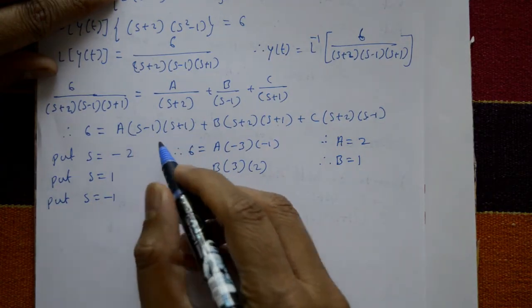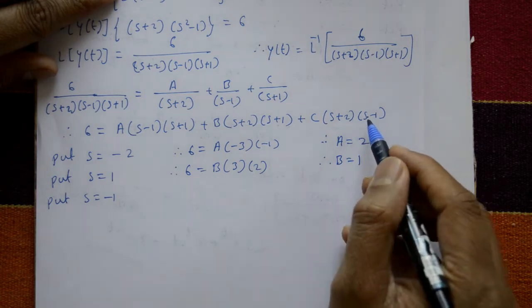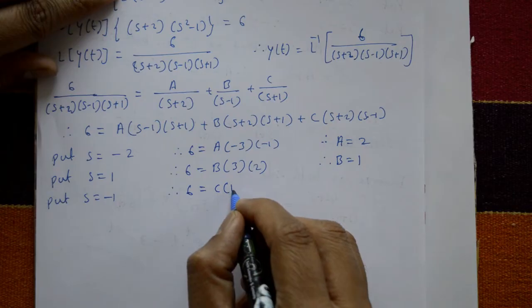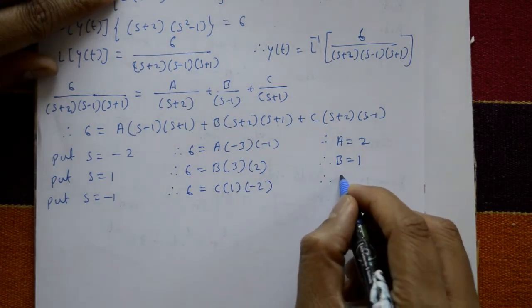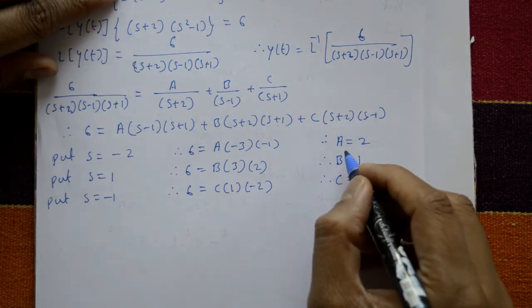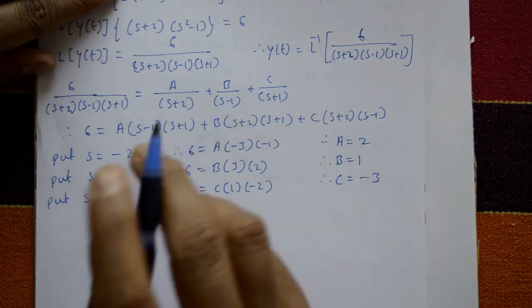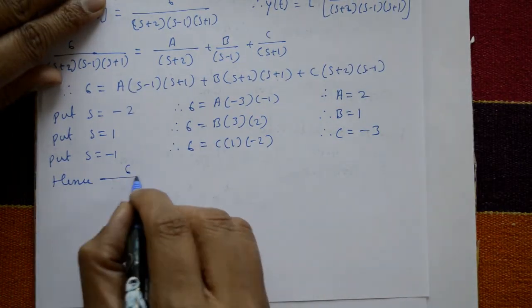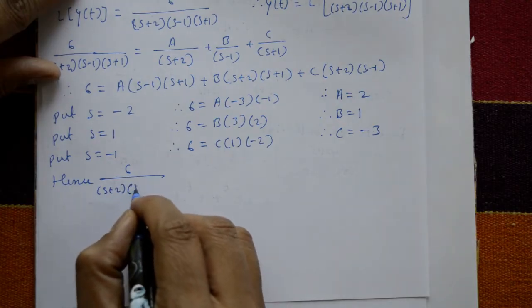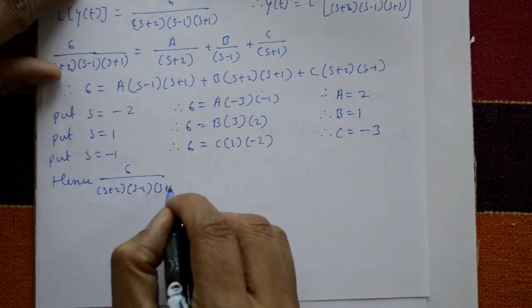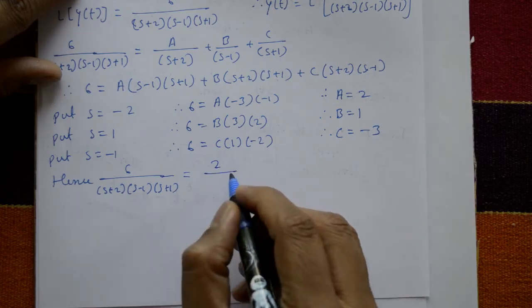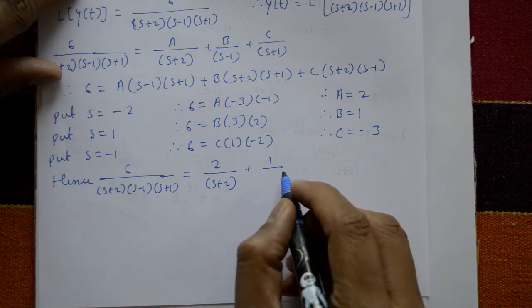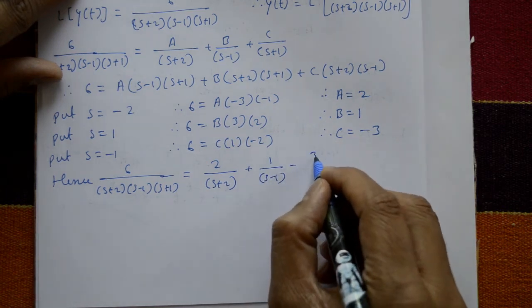Putting s = -1: 6 = C·1·(-2), so C = -3. Substituting A = 2, B = 1, C = -3: 6/[(s+2)(s-1)(s+1)] = 2/(s+2) + 1/(s-1) - 3/(s+1).